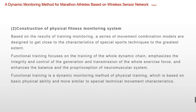The construction of the physical monitoring system. According to the training monitoring results, a series of action combination models are designed to maximize the characteristics of special sports techniques. The function training focuses on the training of the whole dynamic chain, emphasizing the integrity and control of the whole movement force and transmission, and the balance in the nerve-muscle system. Functional training is a kind of physical training dynamic monitoring method based on basic physical energy and closer to special technical action characteristics.